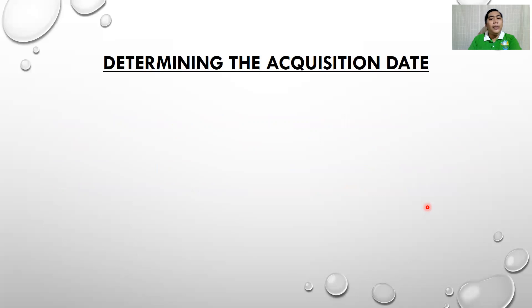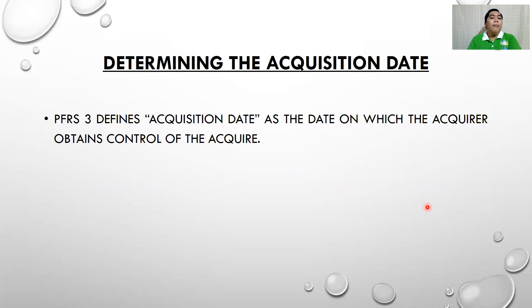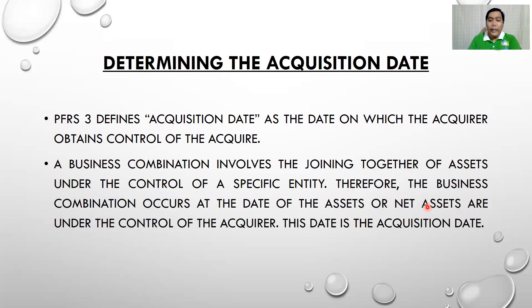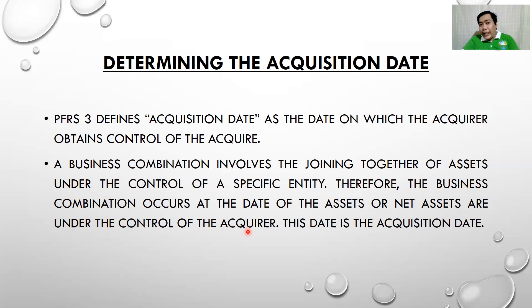The next step is to determine the acquisition date. According to PFRS 3, the acquisition date is the date on which the acquirer obtains control of the acquiree. A business combination involves joining assets under the control of a specific entity. Therefore, the business combination occurs on the date the net assets are under the control of the acquirer — that is the acquisition date.